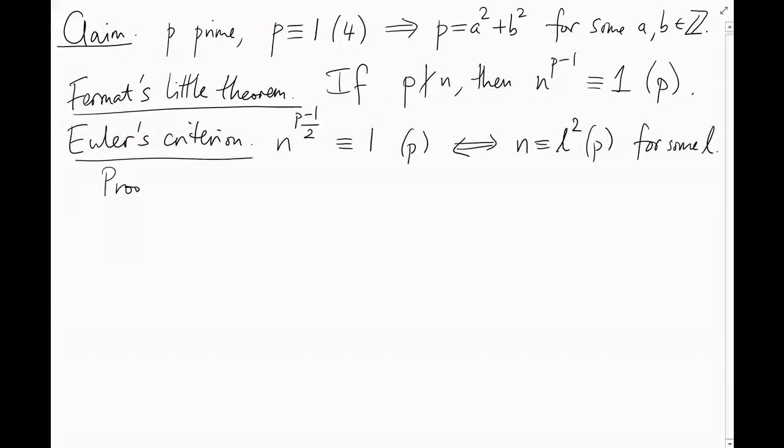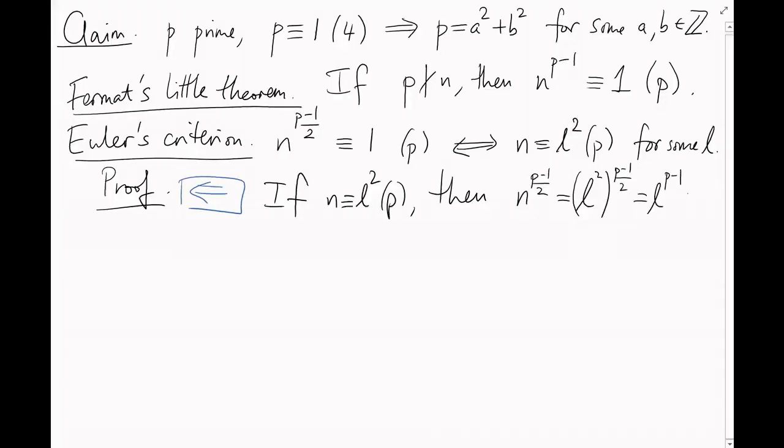Okay, here's a proof. Let's do the easy part first. If n is l squared mod p, then n to the (p-1)/2 is (l squared) to the (p-1)/2, which is just l to the (p-1), which is just 1 mod p by Fermat's little theorem. Okay, now what if n isn't a square? Well, we know that all the numbers 1, 2, 3, up to p-1 satisfy the equation n to the (p-1) subtract 1 equals 0 mod p.